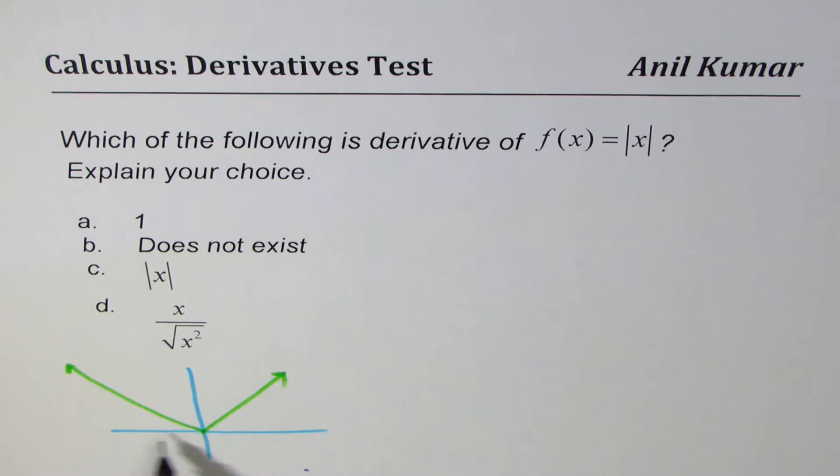So, when x is less than 0, the derivative is minus 1. And when x is greater than 0, it is plus 1. Now, we are not given that kind of a choice here.